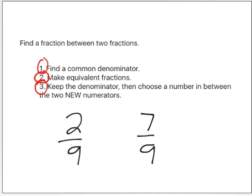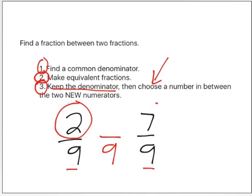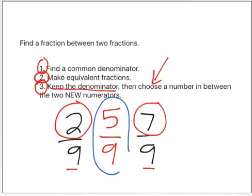Step number three says keep the denominator. I have two-ninths, so I'm going to keep the nine. Now I have to choose a number in between my numerators. I need to choose a number between two and seven. I'm going to choose the number five. My fraction in between is five-ninths.